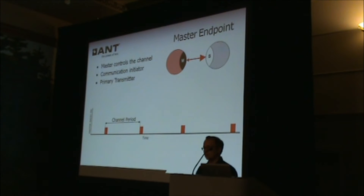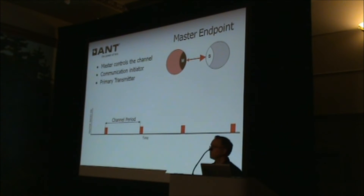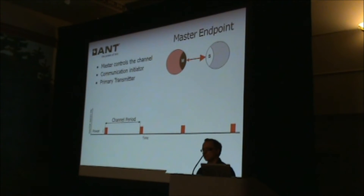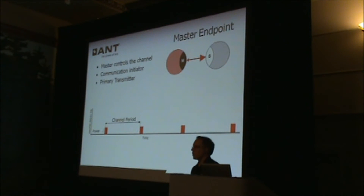Within the ANT+ ecosystem, we define what that channel period is. For example, a heart rate monitor must have a channel period of 4 Hz as defined in the device profile. Each message is sent at a configurable power level, from 0 dBm to −20 dBm. Most people just use 0 dBm, though there are use cases where you'd want to reduce power if you don't need to transmit far.